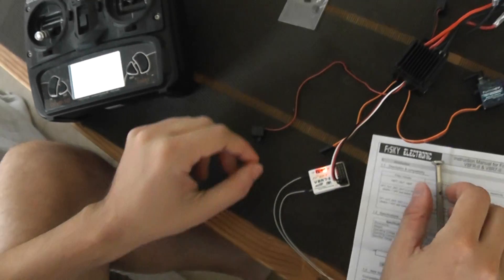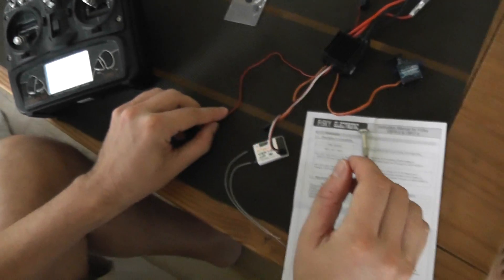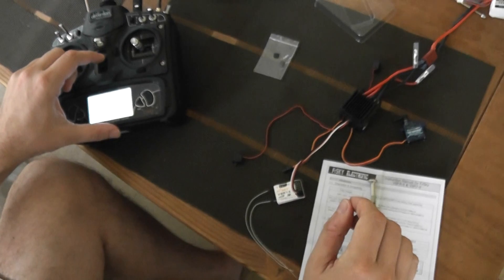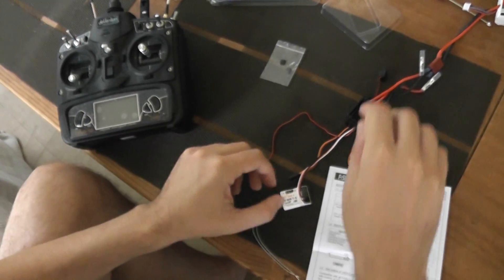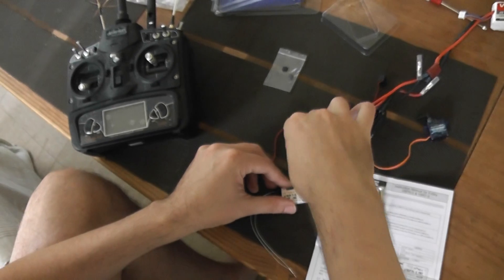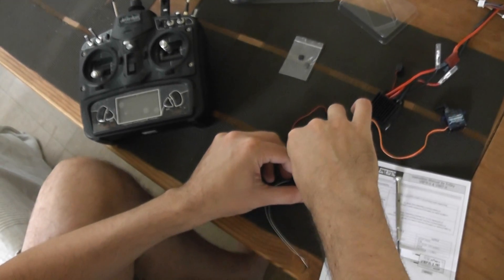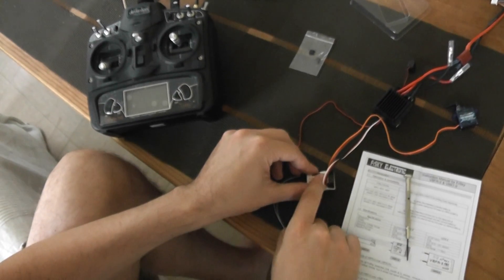So I can turn off the receiver, turn off the transmitter. I will use a small servo as demonstration. I will plug it in channel 1 there.